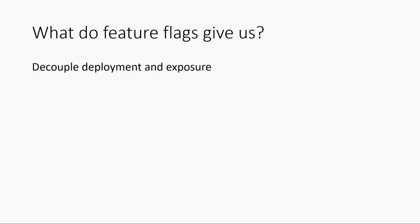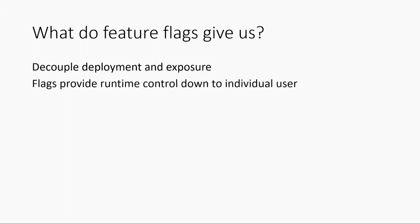If I want to go announce something at a conference, how do I allow the engineering team to go build it, test it, deploy it — all without necessarily showing it to the whole world and ruining the event in some sense? Feature flags provide this kind of granular control, all the way down to the individual user, and we'll talk about the granularity there.